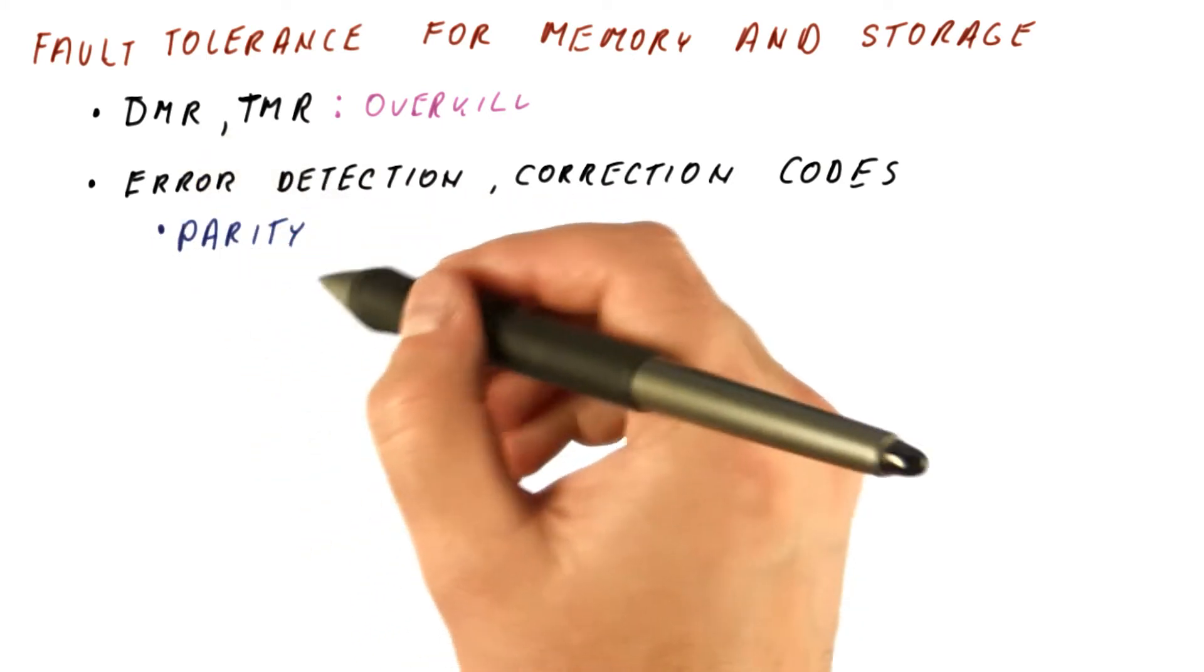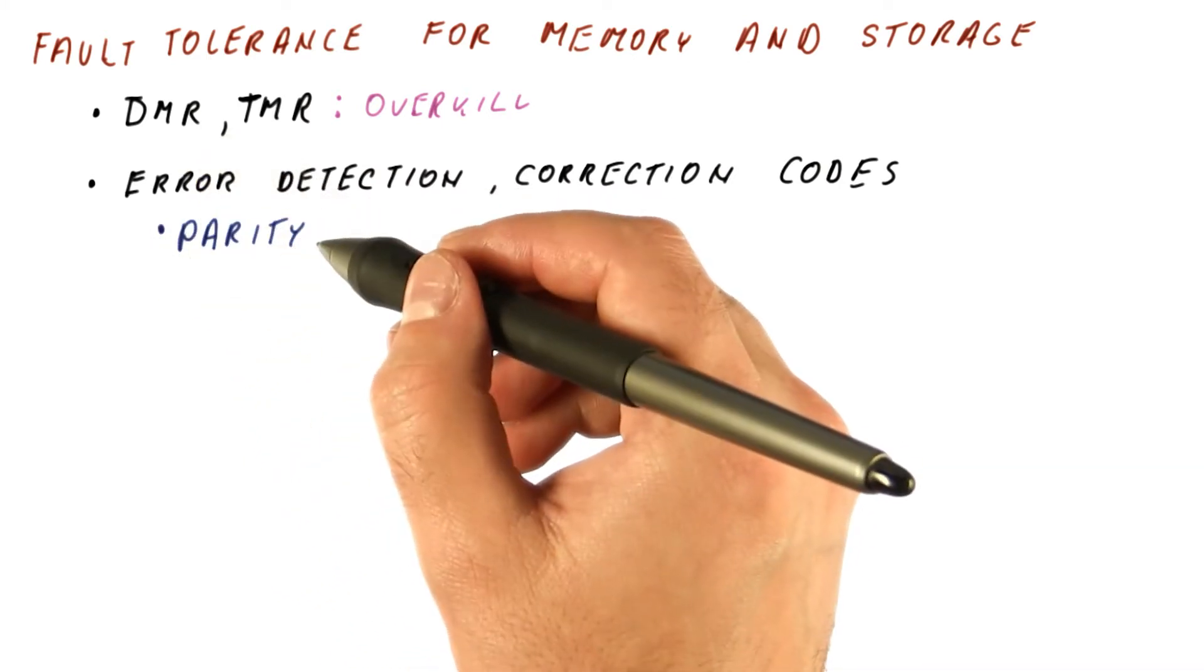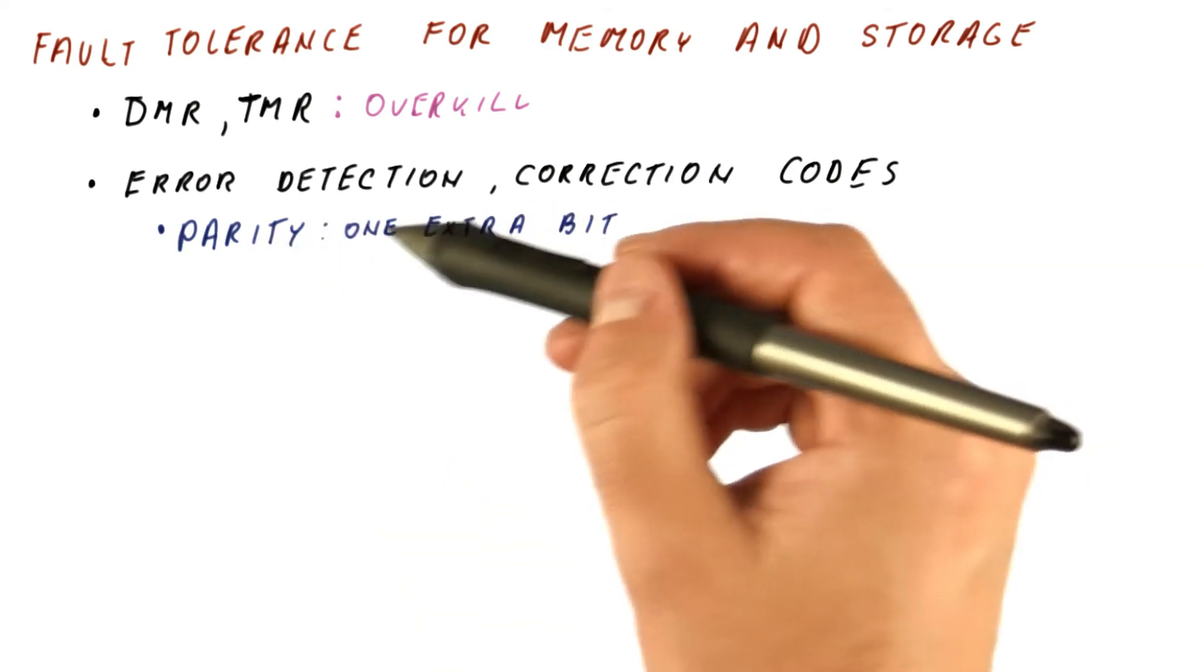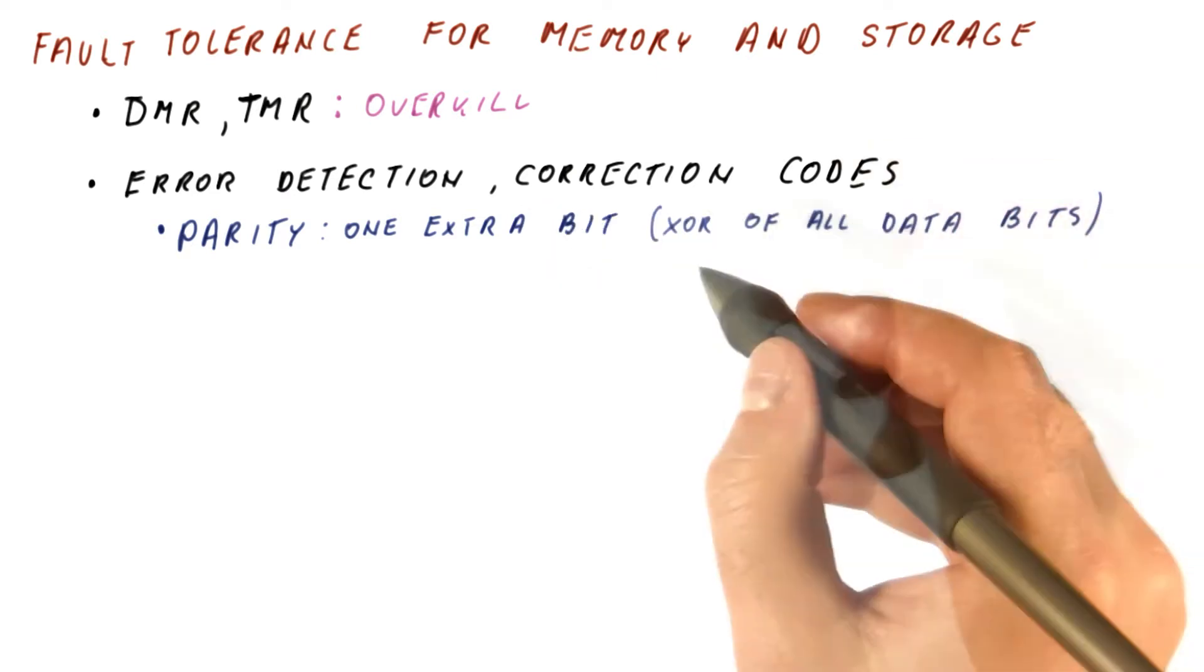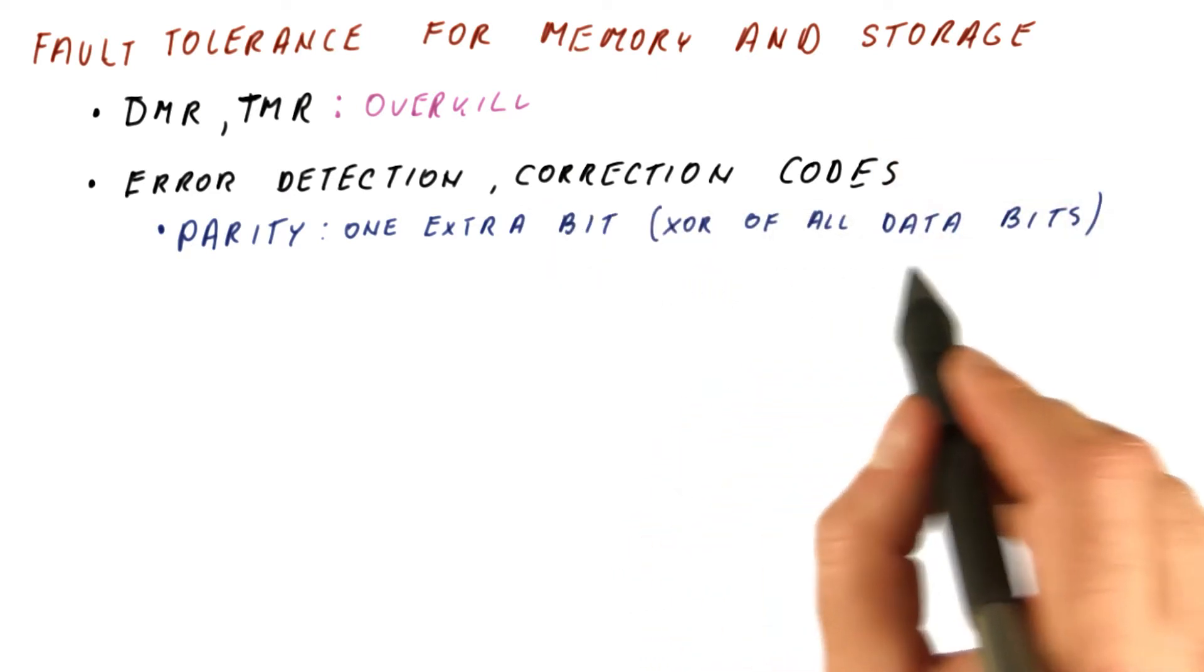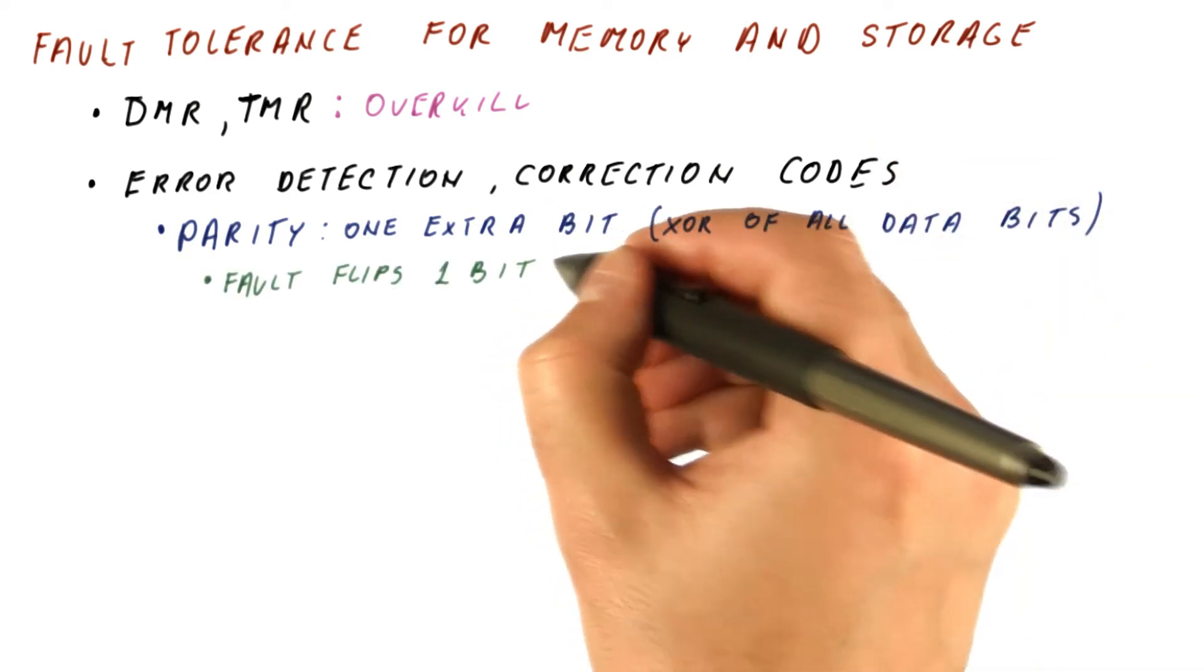The simplest technique often used for memory and storage is parity. With parity, we add one extra bit to the data bits. That extra bit can be computed simply as an XOR of all the data bits.